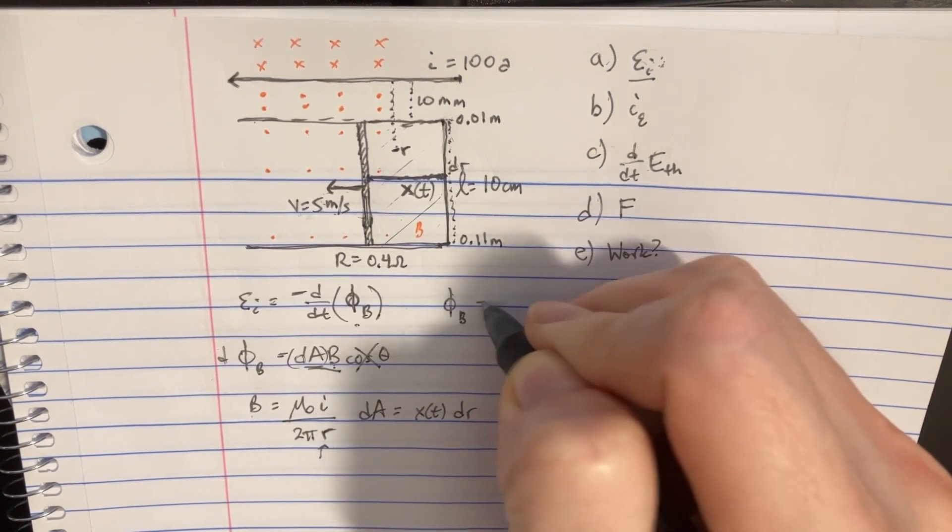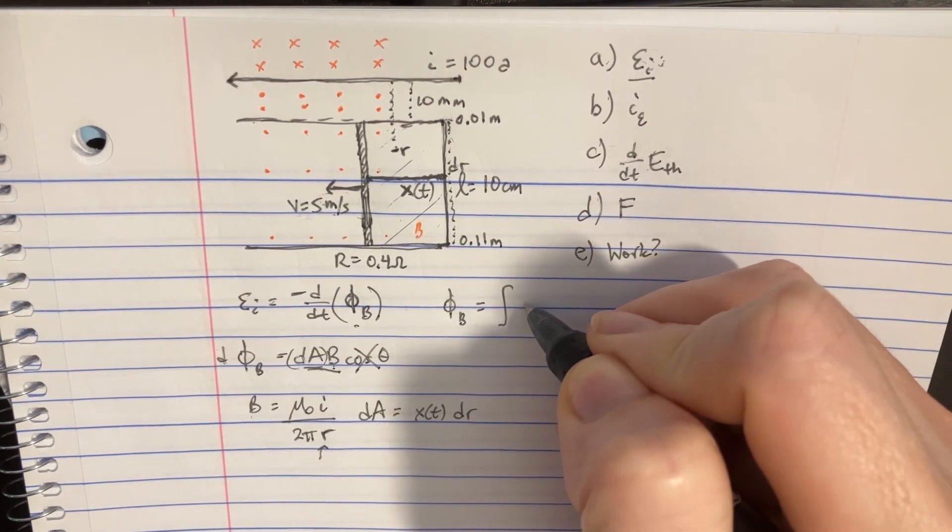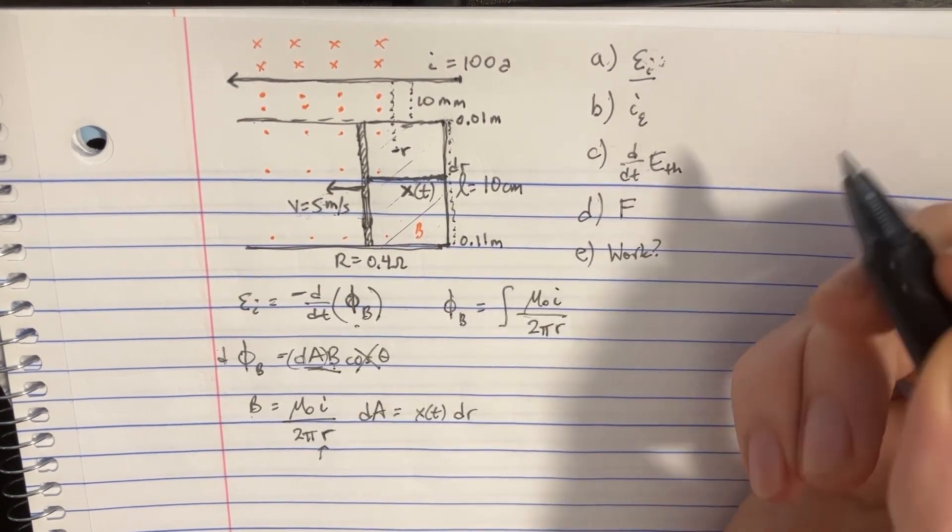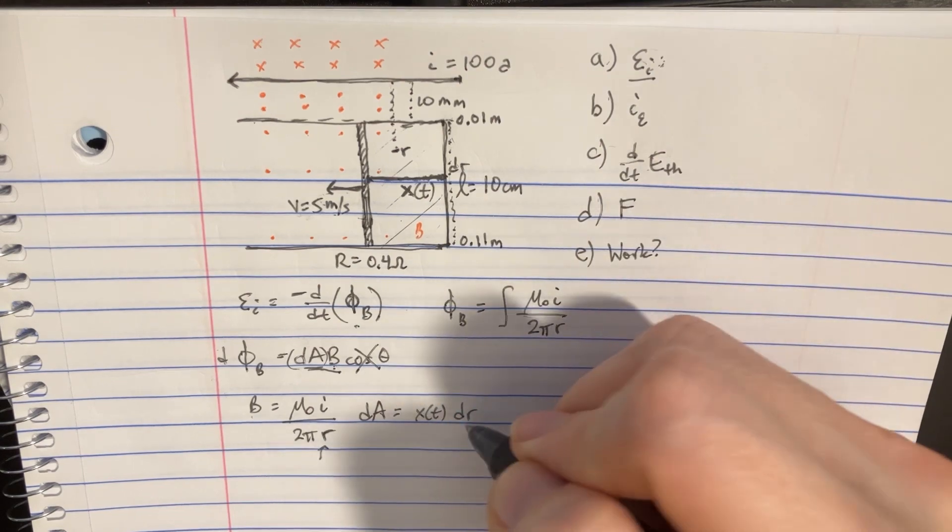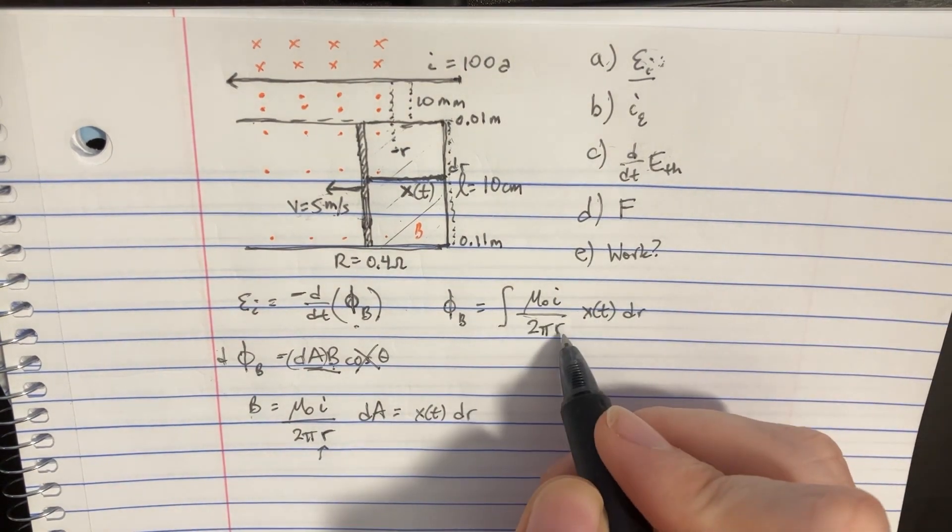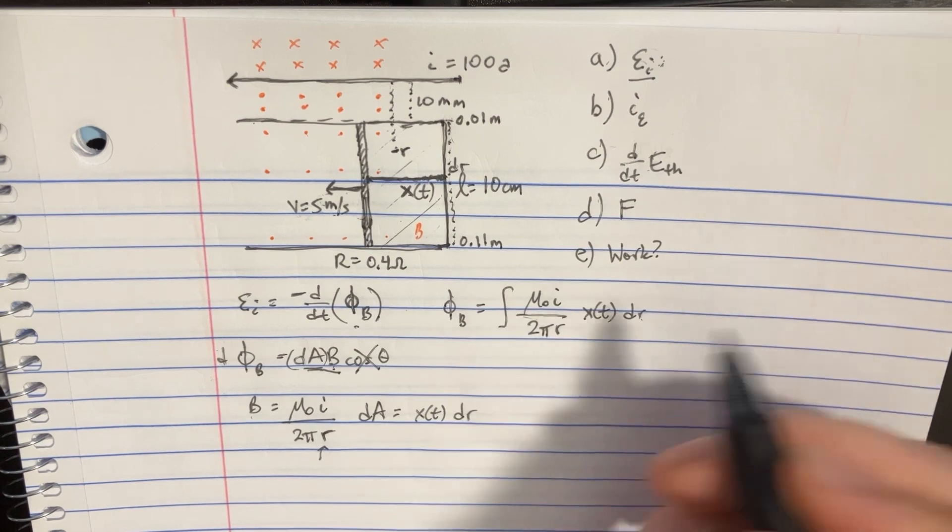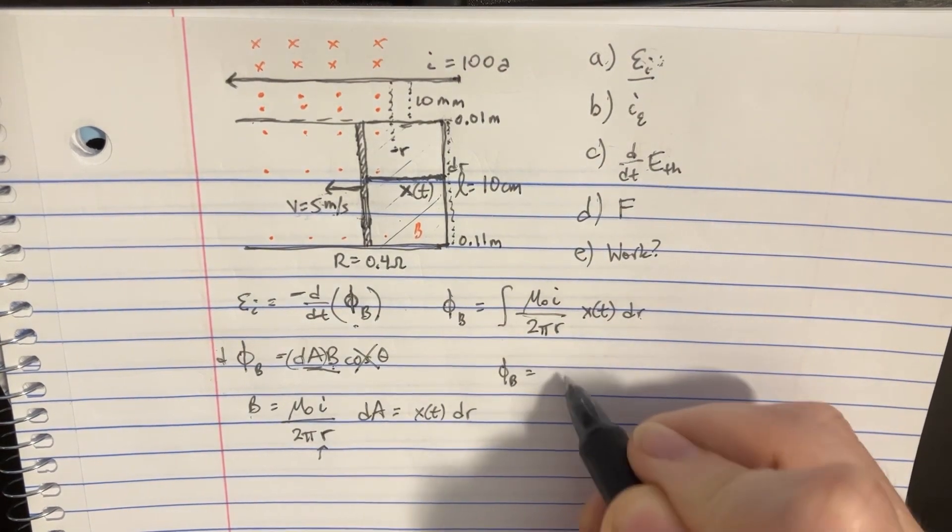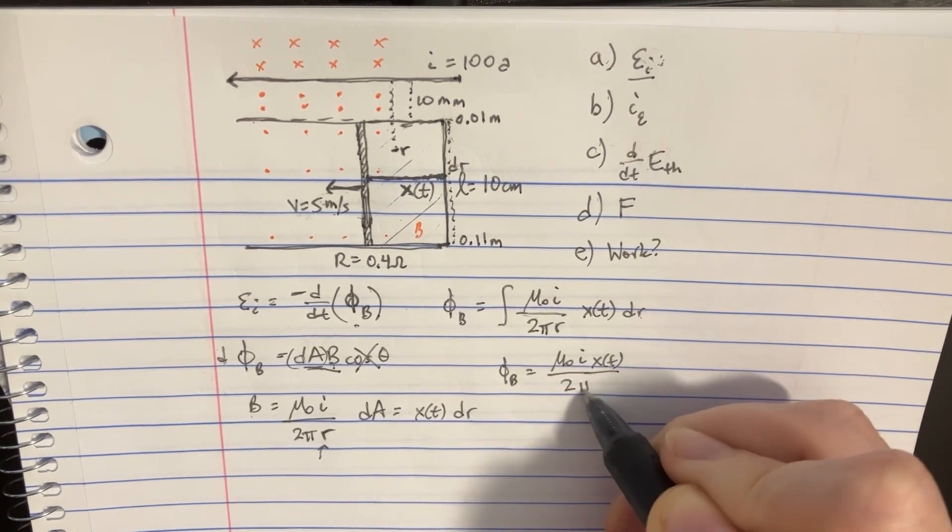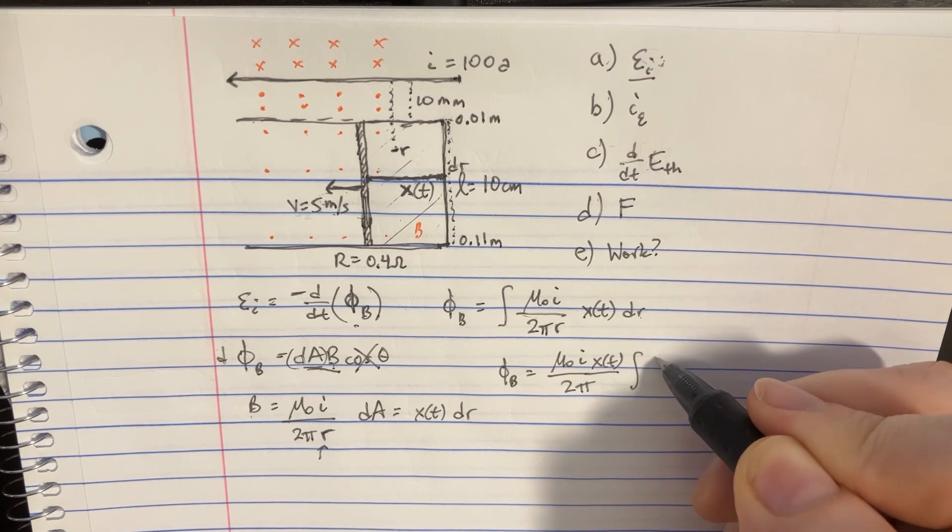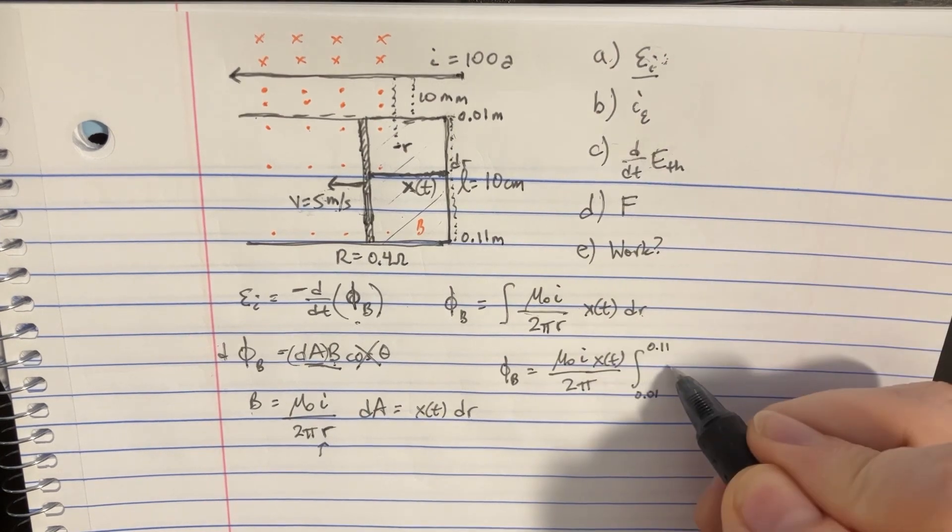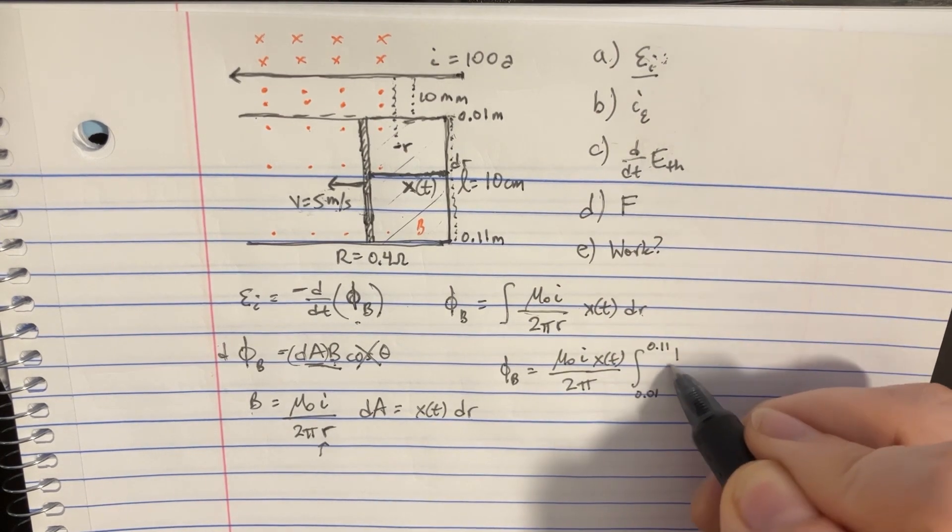So the flux is equal to the integral of the b, which is mu naught i divided by 2 pi r, and then times the dA, which is going to be x times the d and the dr. Now we're just integrating over r, so all this stuff is essentially constant. We're just going to pull it out. So we'll get mu naught i over, and here's the x of t, over 2 pi integrated. And we could put their integration limits from 0.01 to 0.11, and that would be 1 over r dr.